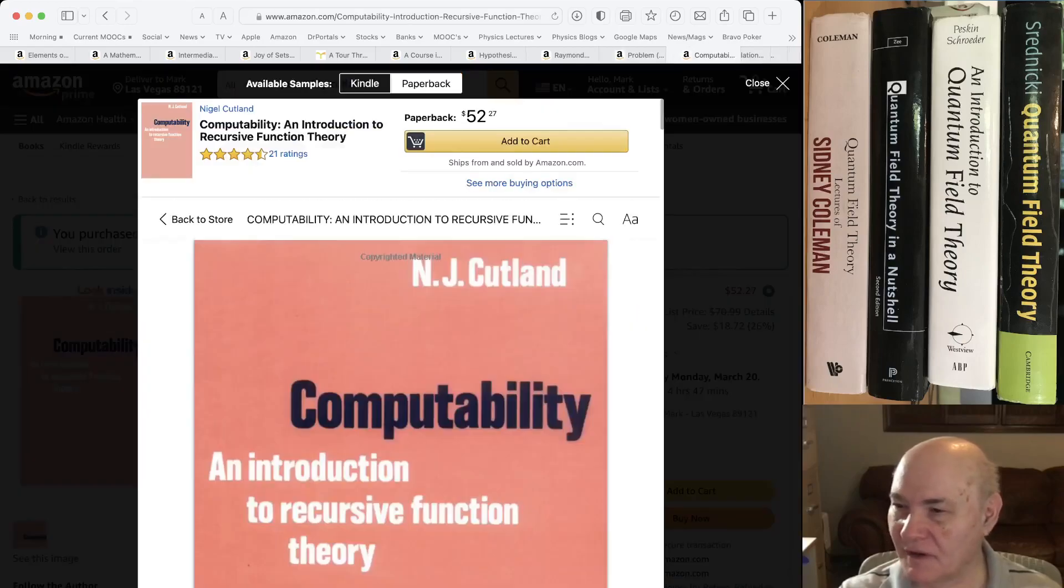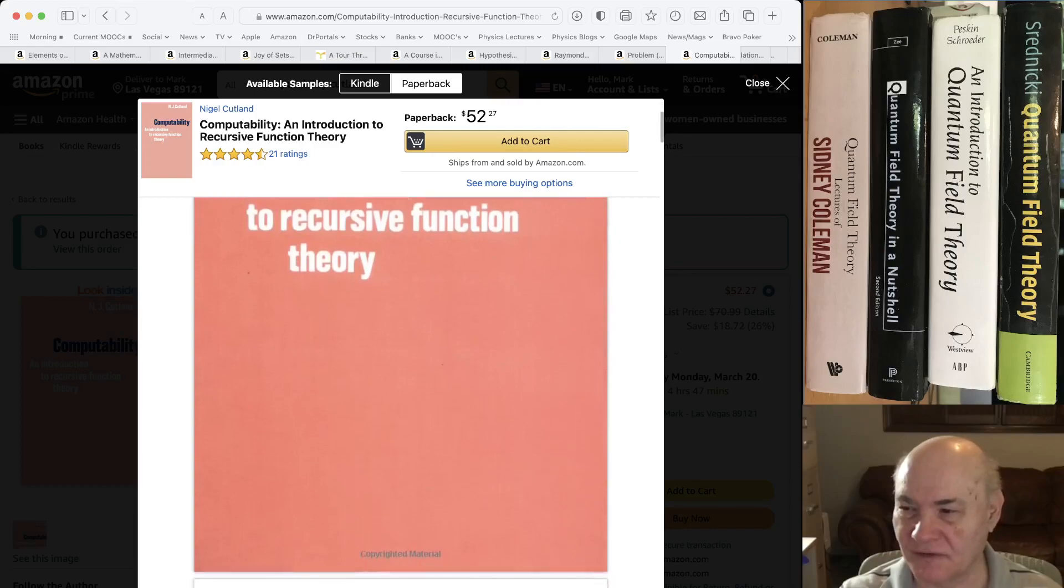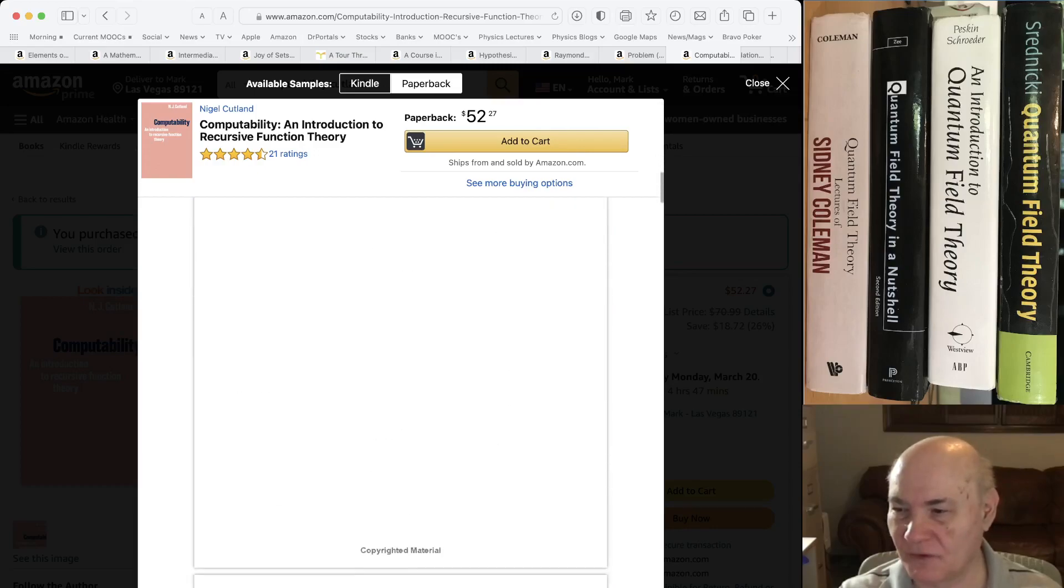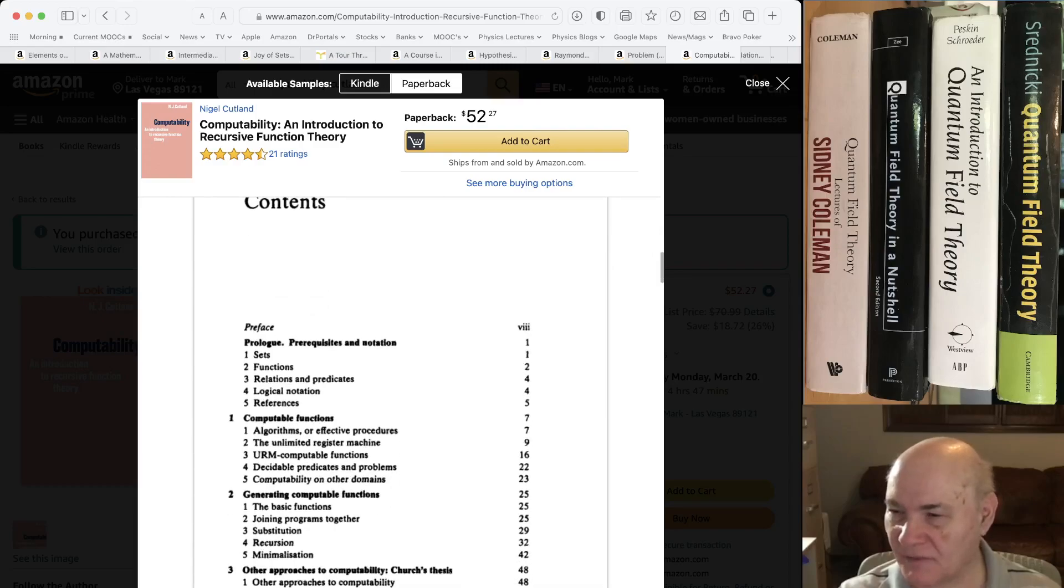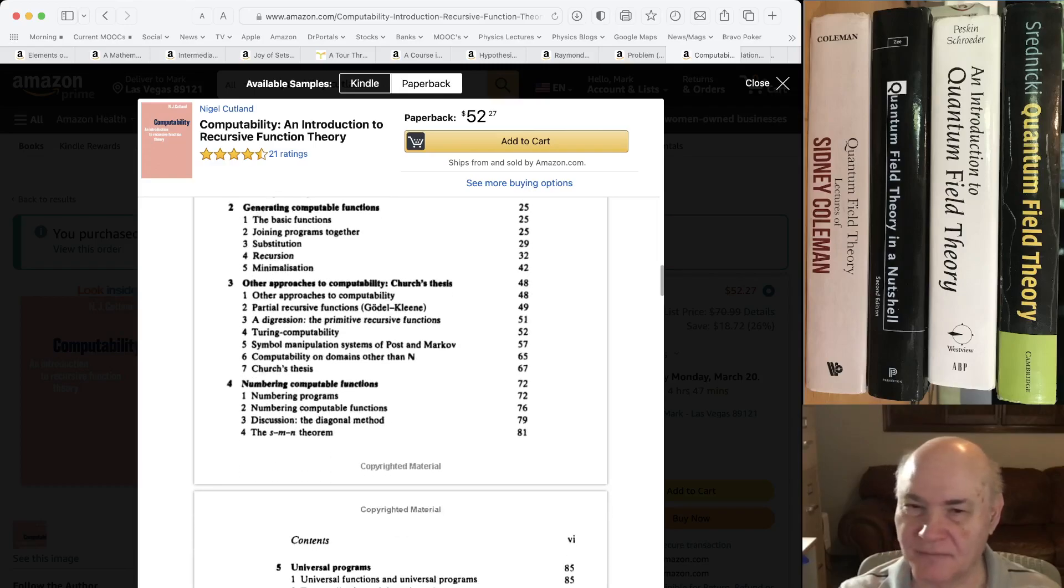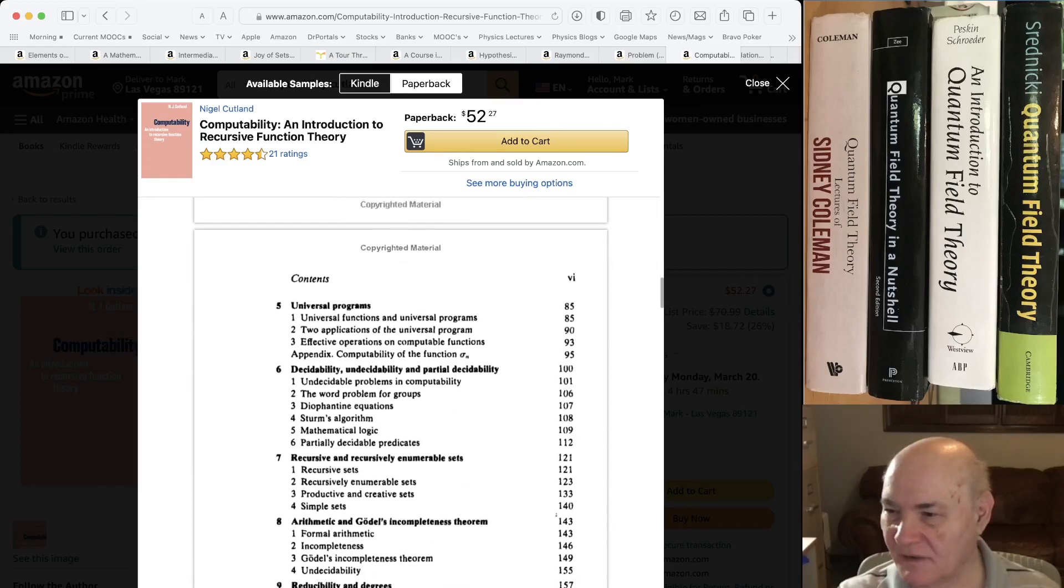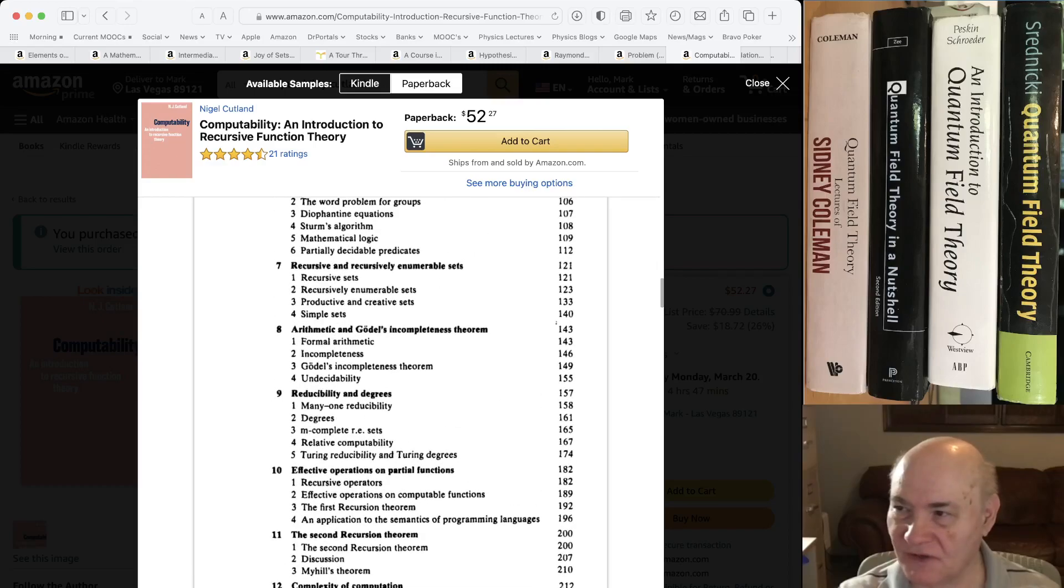I only have one book on computability and recursive function theorem. There are others, there are better ones. This is an easy book to read. It's by Cutland and he sort of uses the register model and it's an old book or at least goes back to the 80s. But it's easy to read and he goes through things like primitive recursive and Ackerman's function which isn't primitive recursive but is recursive. He covers a lot of interesting things on effective computation and everything. So it's well worth reading and it's easy.